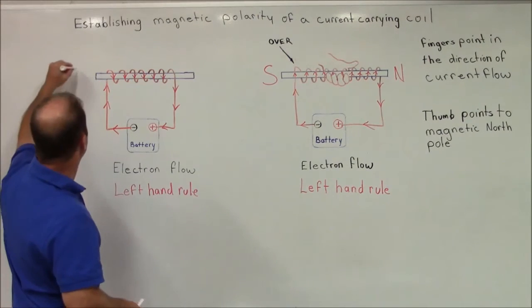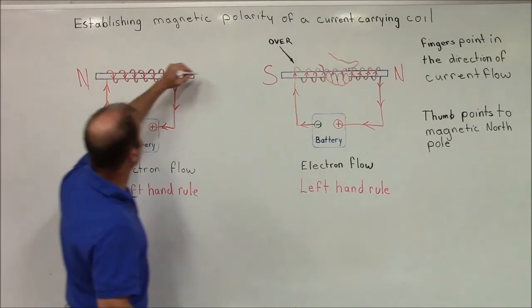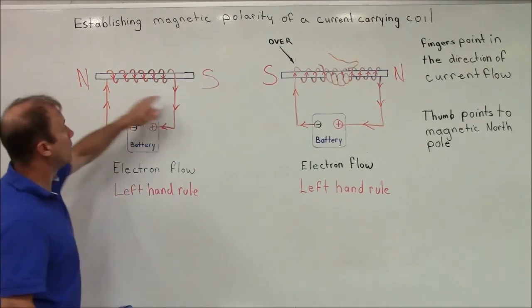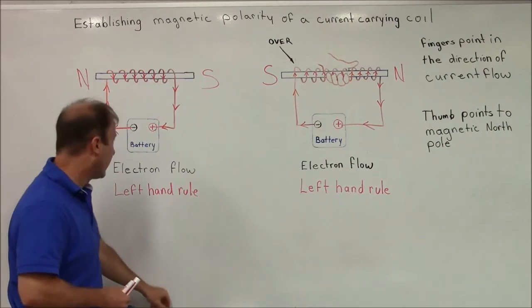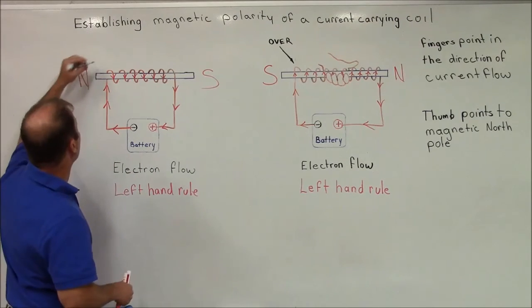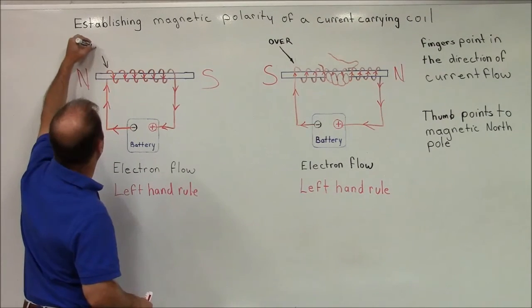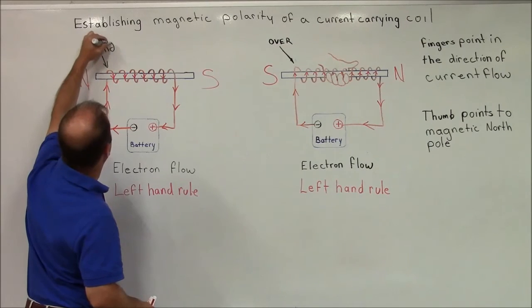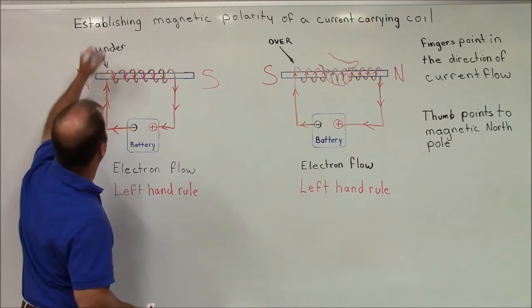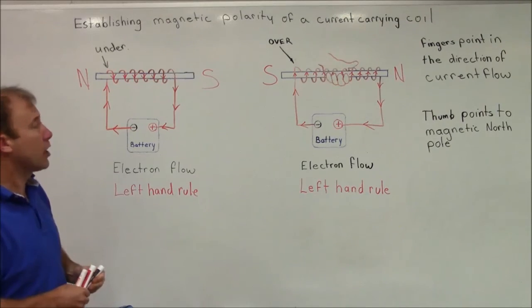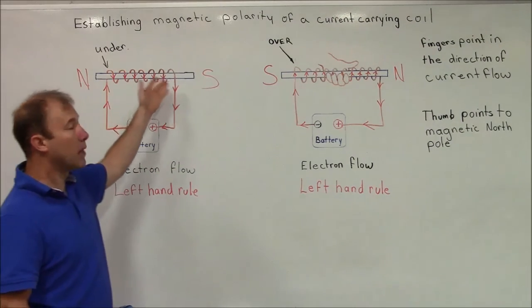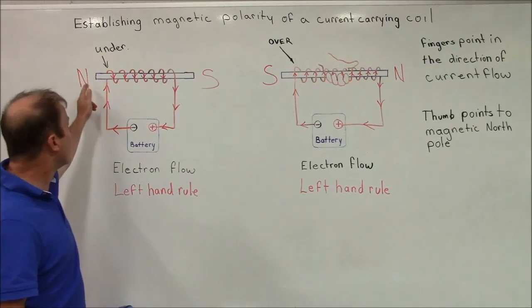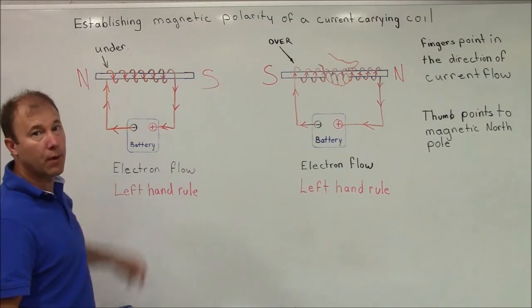So in this case, north is here and south is here. The exact opposite. So this one is with the wrap under. So you can change the direction of your electromagnet by just changing the way you wrap it.